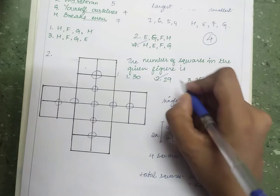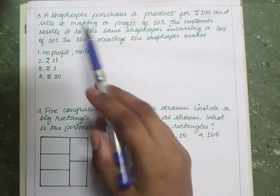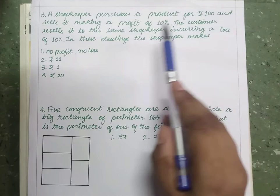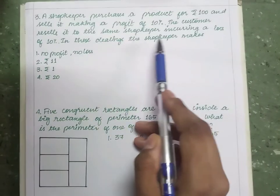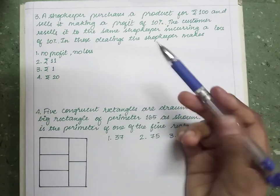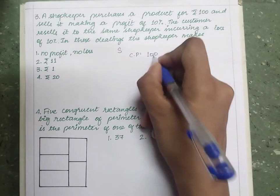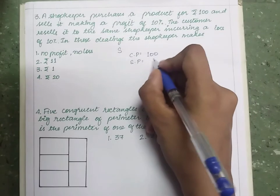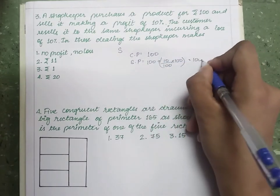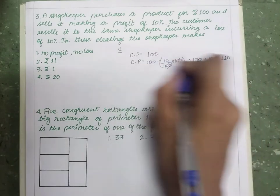Next question: a shopkeeper purchases a product for 100 rupees and sells it making a profit of 10 percent. The customer resells it to the same shopkeeper incurring a loss of 10 percent. What amount does the shopkeeper gain? The shopkeeper's cost price is 100 rupees; selling at 10% profit means he sells it at 100 + 10 = 110 rupees.